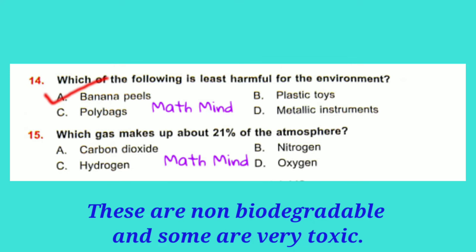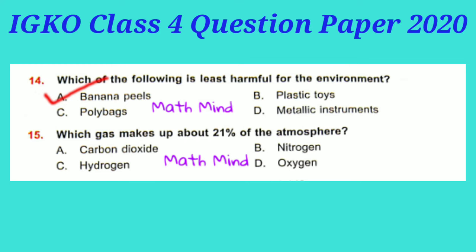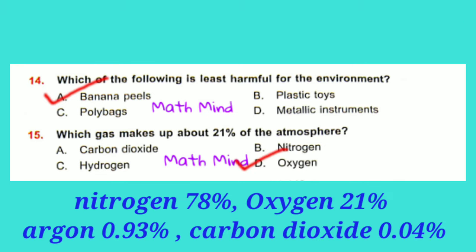Question No. 15: Which gas makes up about 21% of the atmosphere? Option D is correct: Oxygen. Nitrogen makes up 78%, Oxygen 21%, Argon 0.93%, Carbon dioxide 0.04%, and the remaining are other gases.